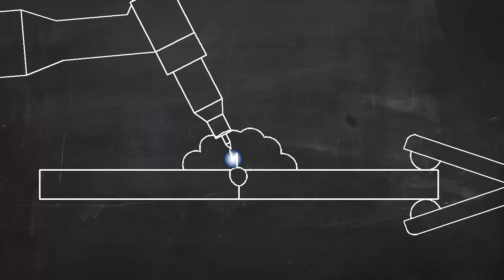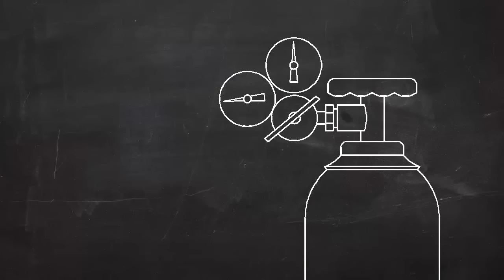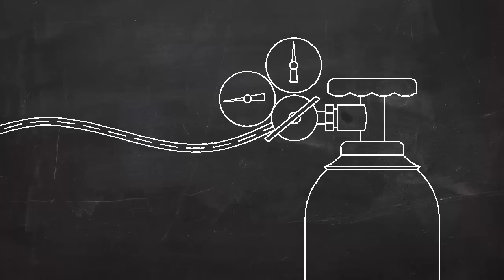In TIG welding, the molten metal is protected by a shielding gas. This gas, usually argon and sometimes helium or other gases, keeps the molten metal from reacting with oxygen and water vapor in the atmosphere. This shielding gas is stored in high pressure cylinders like these. The pressure is reduced to a usable level by a device called a regulator. The shielding gas flows through a hose and comes out right at the point of the weld.